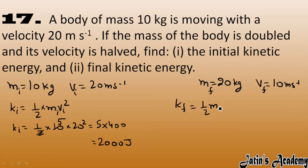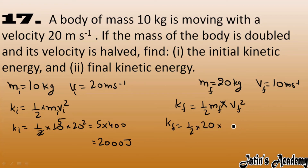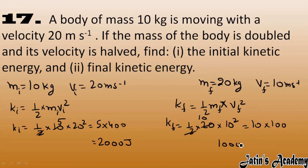Now we calculate the final kinetic energy. Final kinetic energy equals half, final mass is 20, final velocity is 10 squared. So 10 into 100, which gives us 1000 joule. So initial kinetic energy is 2000 joule, and in the second case when mass is doubled and velocity is halved, kinetic energy is reduced to 1000 joule only.